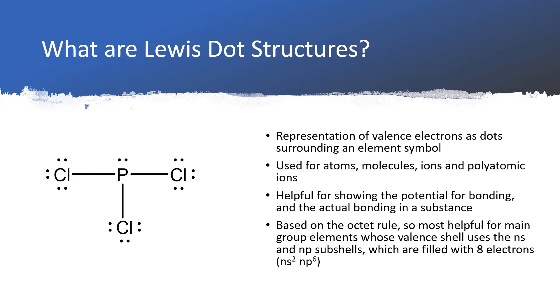Sometimes it's more convenient to show bonding electrons as a line, and so one line is equivalent to two dots.